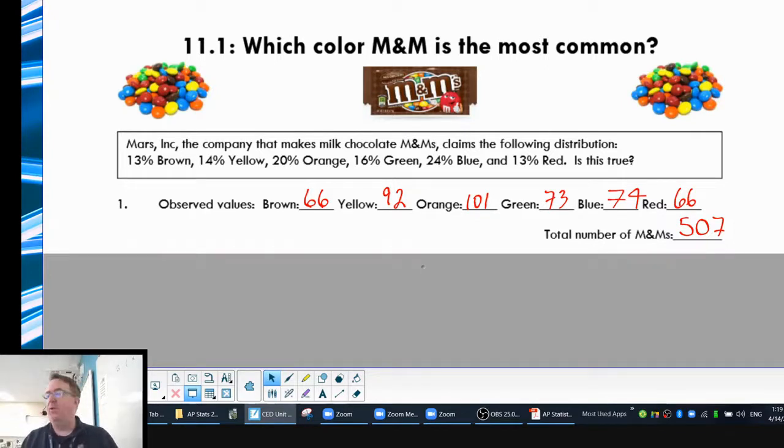So we're going to talk about M&Ms today. The M&M Mars company has a percentage of the types of M&Ms and what percentage they break down into. Interestingly, if you do some digging, it differs depending upon what side of the country you are. The company in the west side does it a little bit different than the east side, but that's beside the point. What I have here is the data from what we did last year. So as you can see, we had 66 brown M&Ms, 92 yellow, 101 orange, 73 green, 74 blue, 66 red for a total of 507. So then we're going to see how that distribution we observed compares to what the M&M Mars Corporation says.